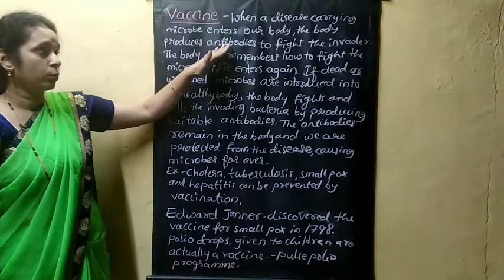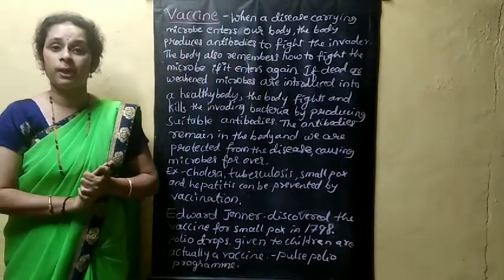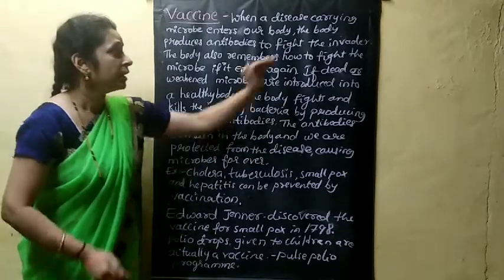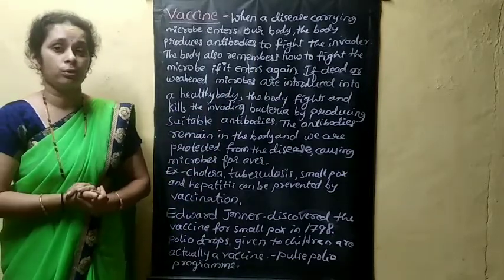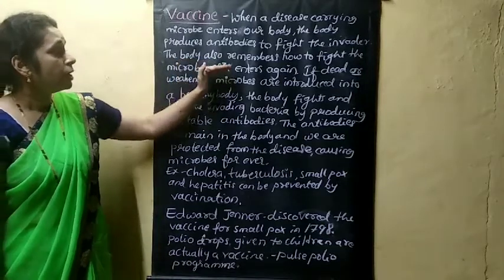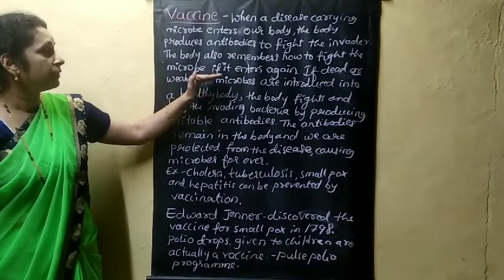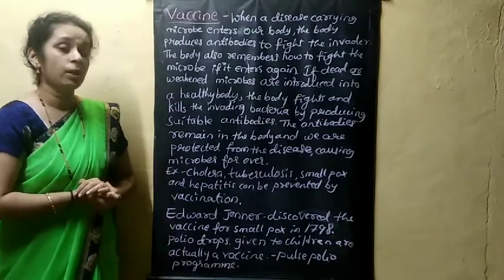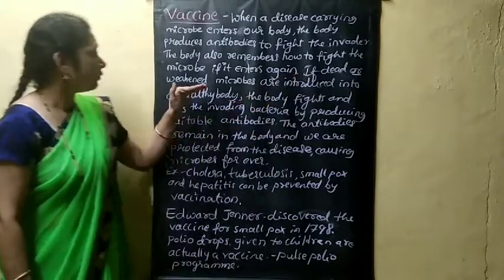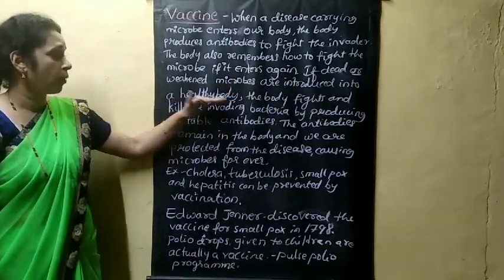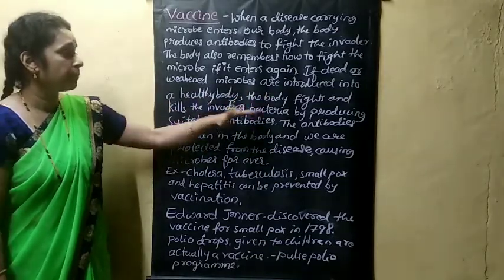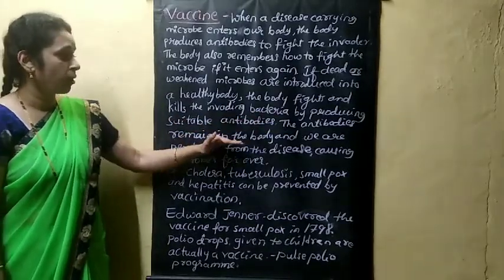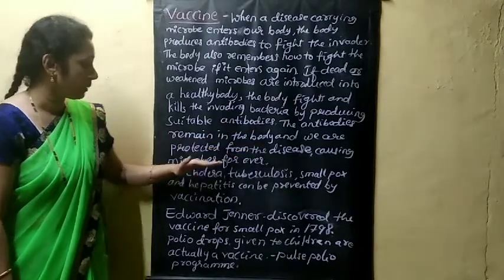When a disease-causing microbe enters our body, the body produces antibodies to fight against the invader. The body also remembers how to fight the microbe if it enters again. If dead or weakened microbes are introduced into a healthy body, the body fights and kills the invading bacteria by producing suitable antibodies. The antibodies remain in the body and we are protected from disease-causing microbes forever.